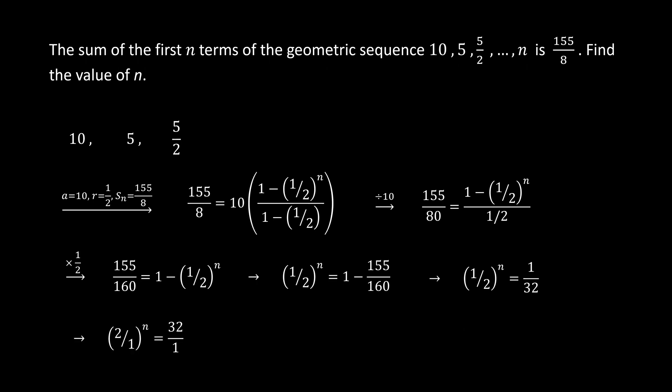Next, we take the reciprocal of both sides to get 2^n equals 32. Since 32 is 2^5, we can conclude that n equals 5.